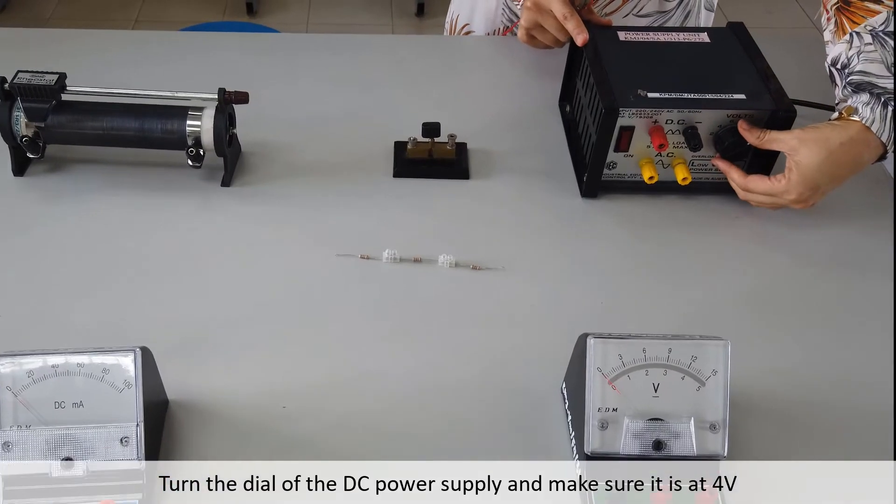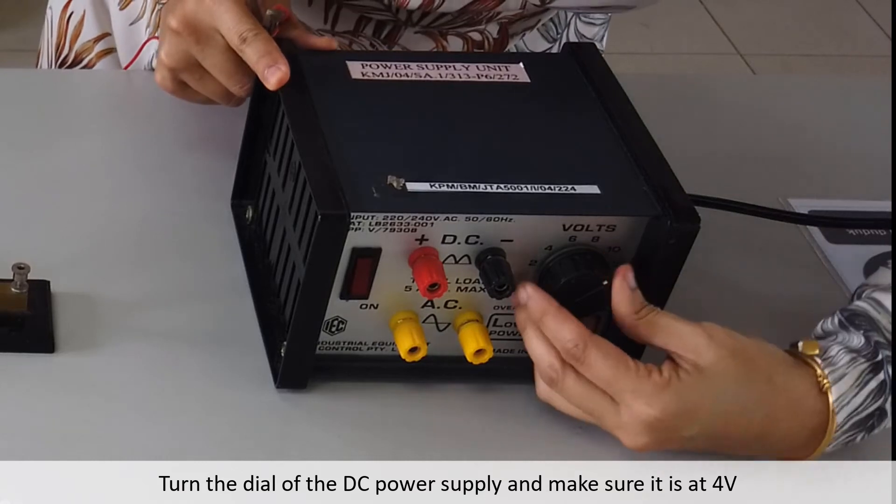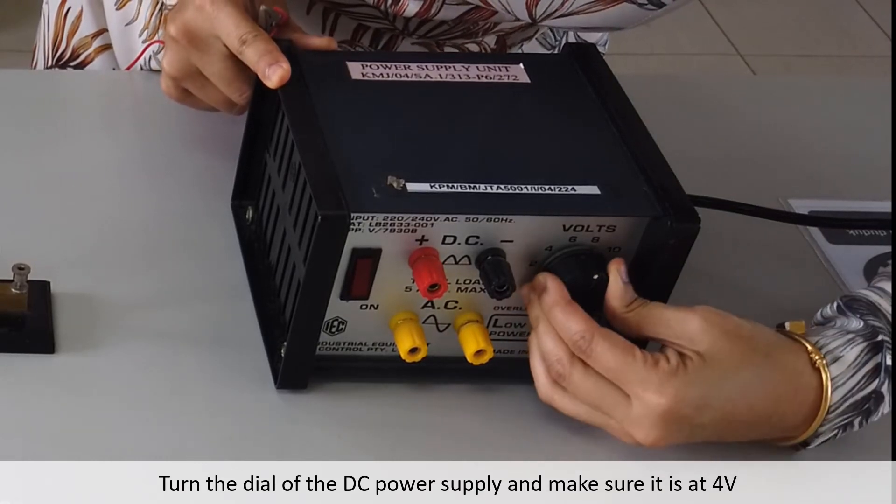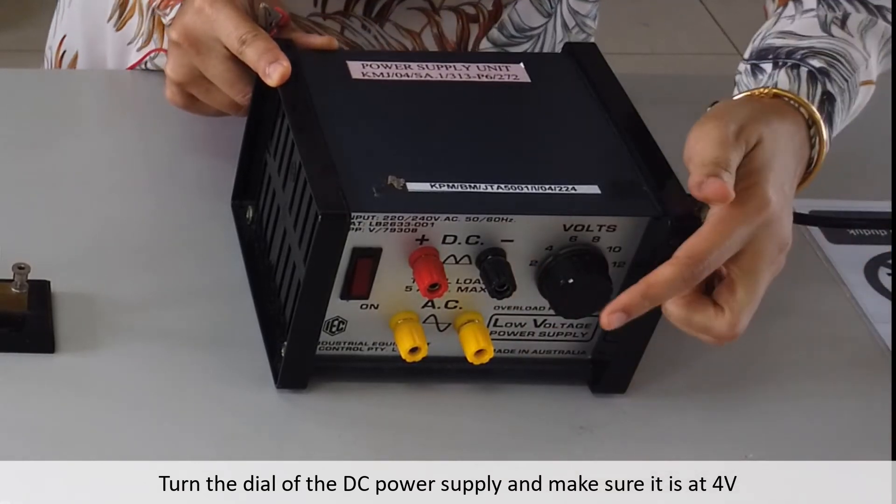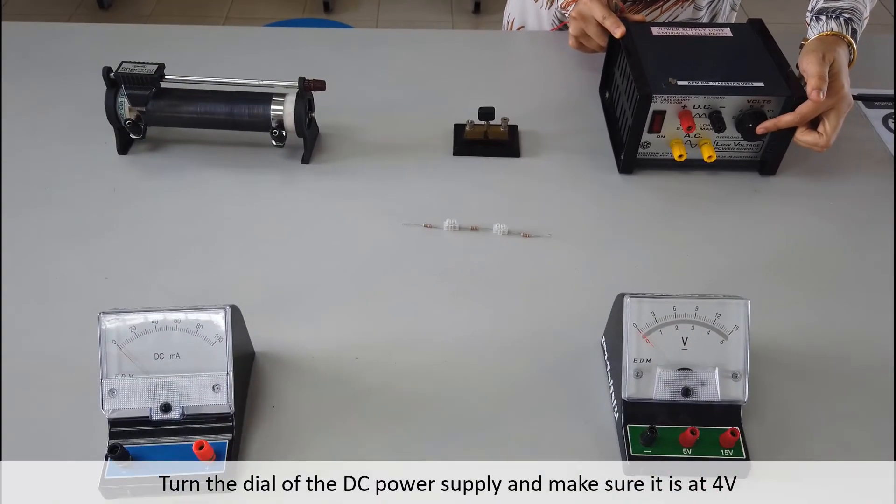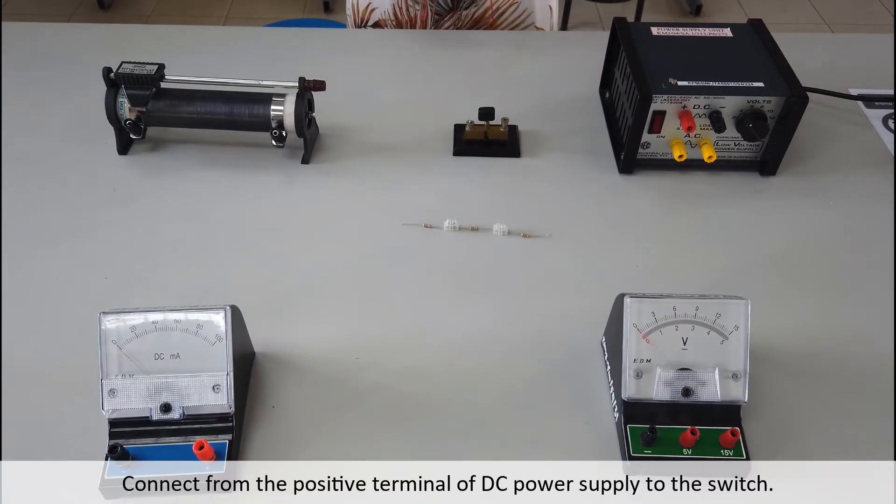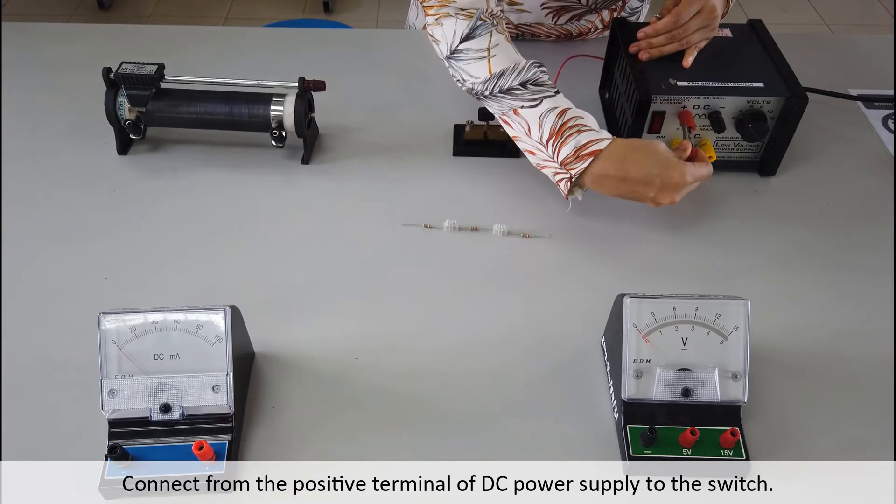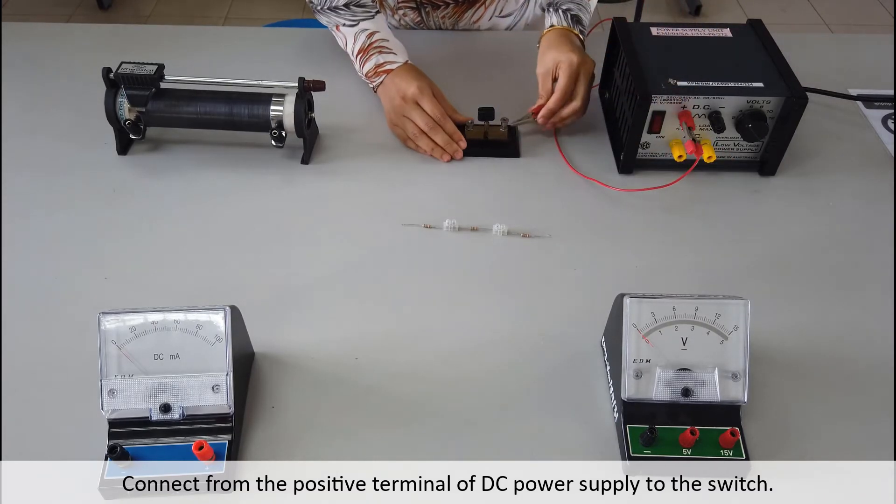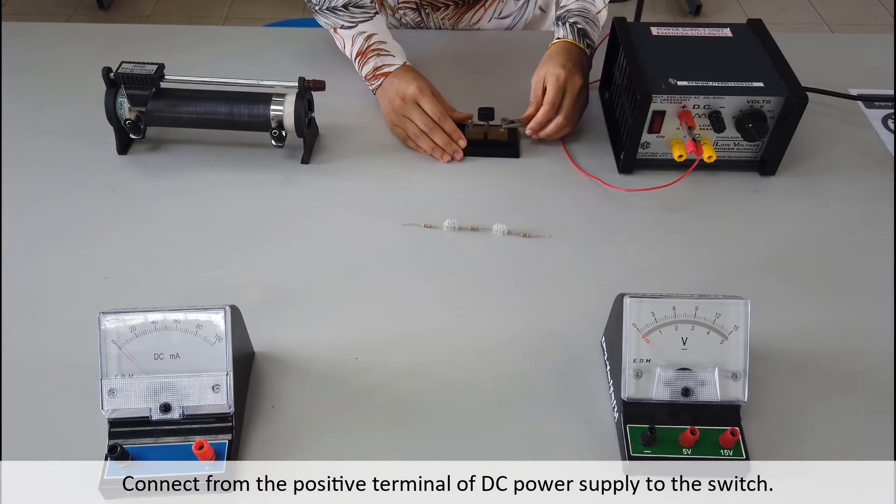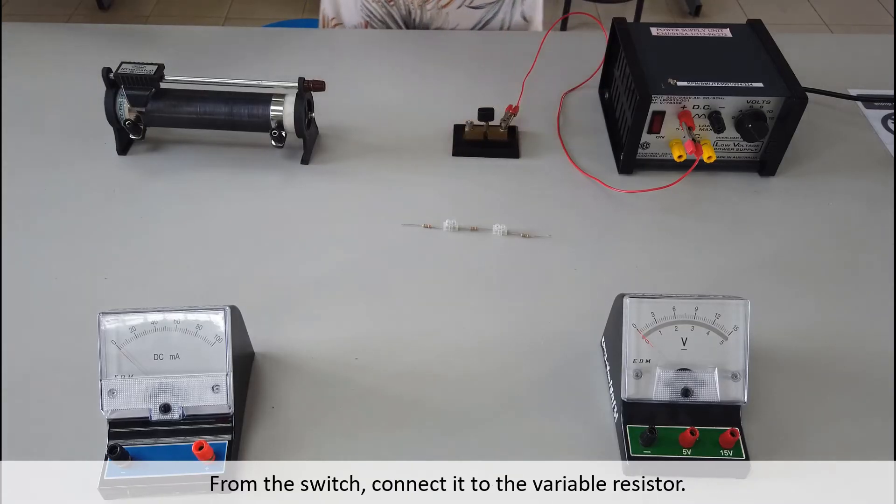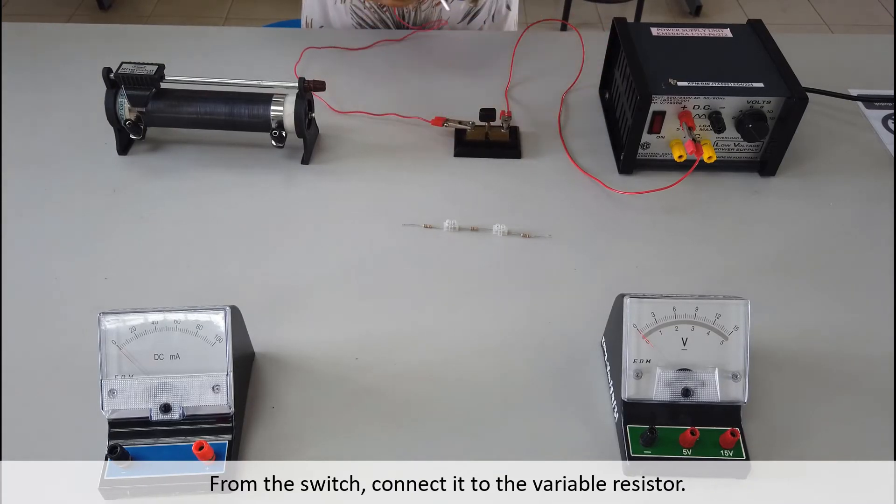Turn the dial of the DC power supply and make sure it is at 4V. Connect from positive terminal of DC power supply to the switch. From the switch, connect it to the variable resistor.